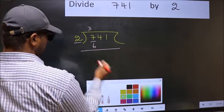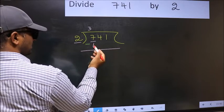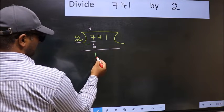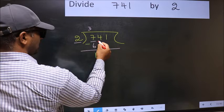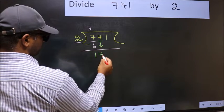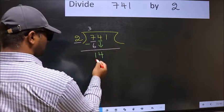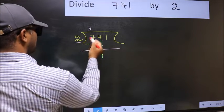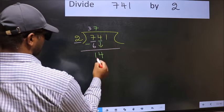Now you should subtract. 7-6, 1. After this, you should bring down the beside number. So 4 down. Now 14. When do we get 14 in 2 table? 2 7s, 14.